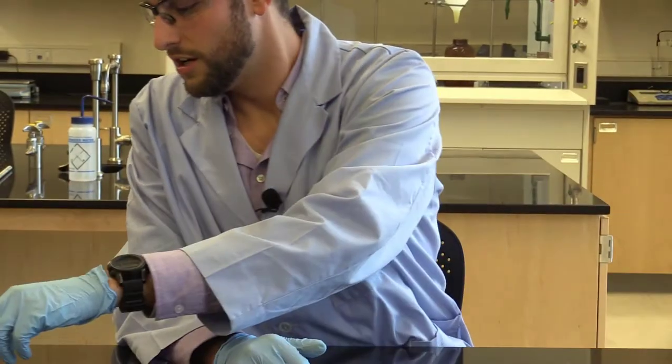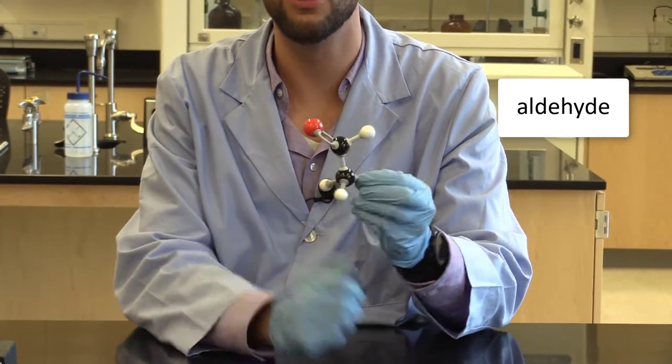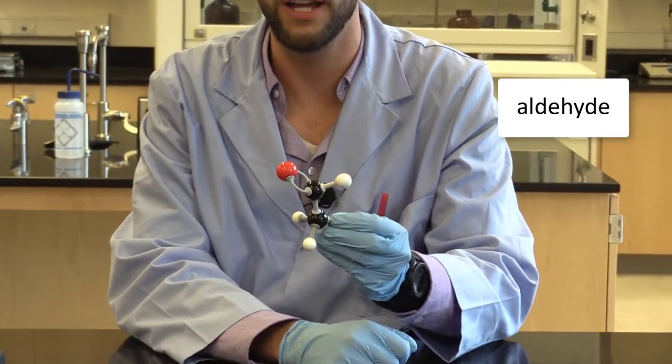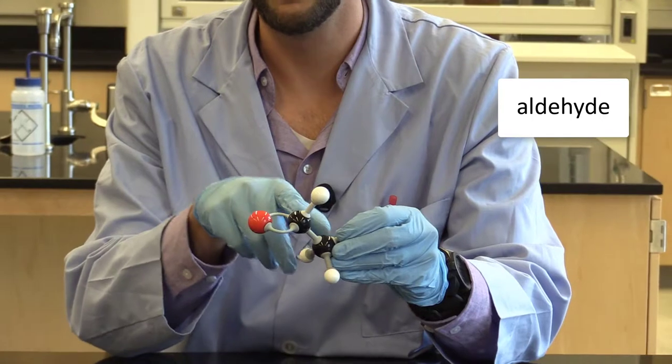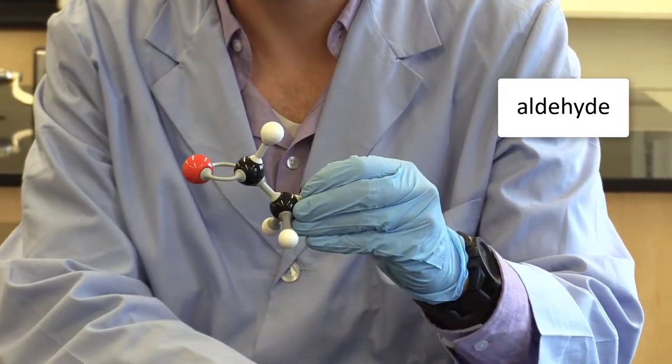So what I will do is I will show each structure. The first one up is an aldehyde, so this you will always find at the end of a compound. It's carbon double bonded to oxygen and then off the carbon you have a hydrogen.